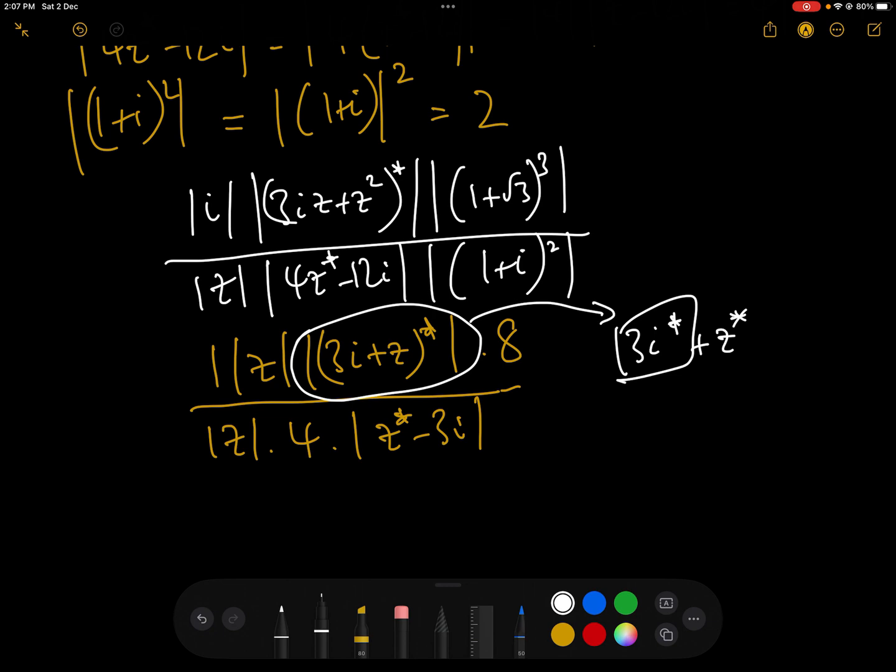And 3i add z conjugate, or 3i conjugate is minus 3i, so that is the same thing as z conjugate minus 3i.